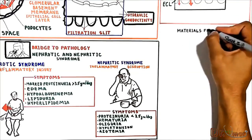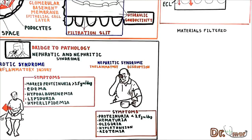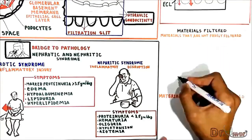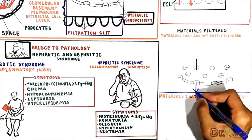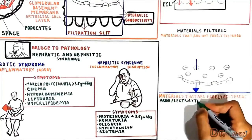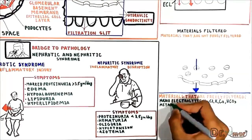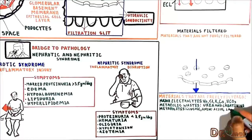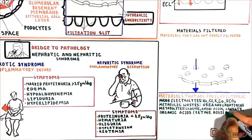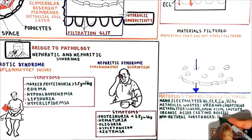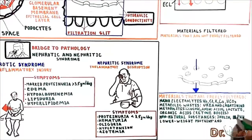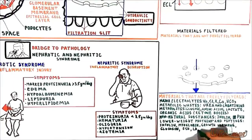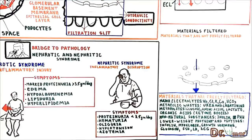The materials filtered across the glomerular membrane are divided into two groups: materials that are easily or freely filtered, and materials that are not freely filtered. The following are easily filtered: major electrolytes like sodium, chloride, potassium, calcium, and bicarbonate; metabolic waste products like urea and creatinine; metabolites like glucose, amino acids, and lactate; organic acids like ketone bodies; non-natural substances like inulin and PAH; and lower weight proteins and peptides like insulin, myoglobin, growth hormone, glucagon, FSH, LH, and HCG.